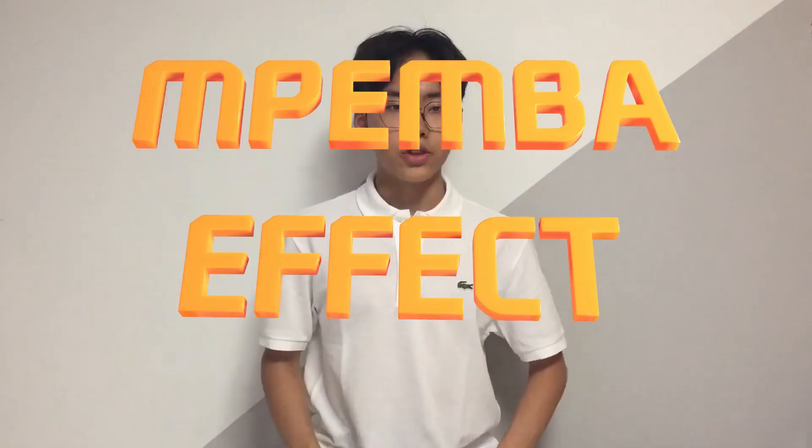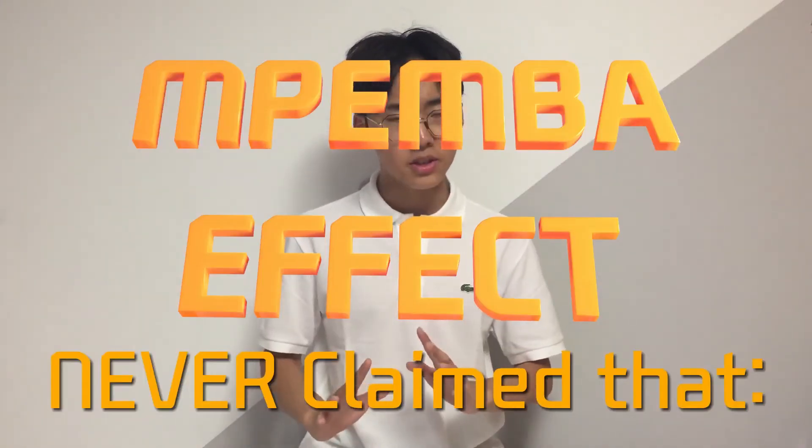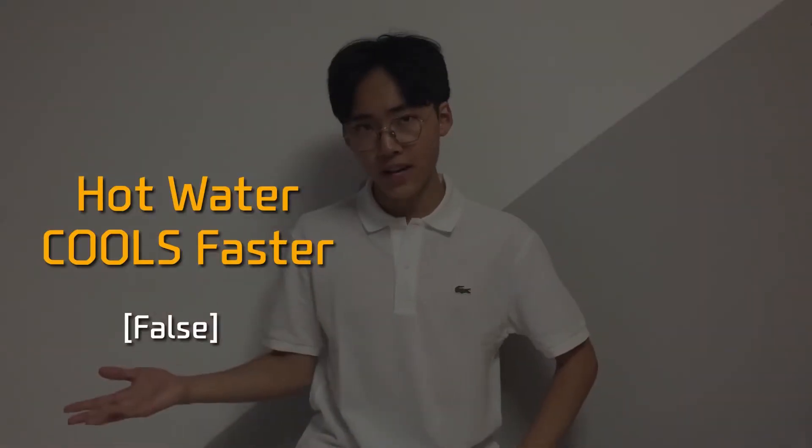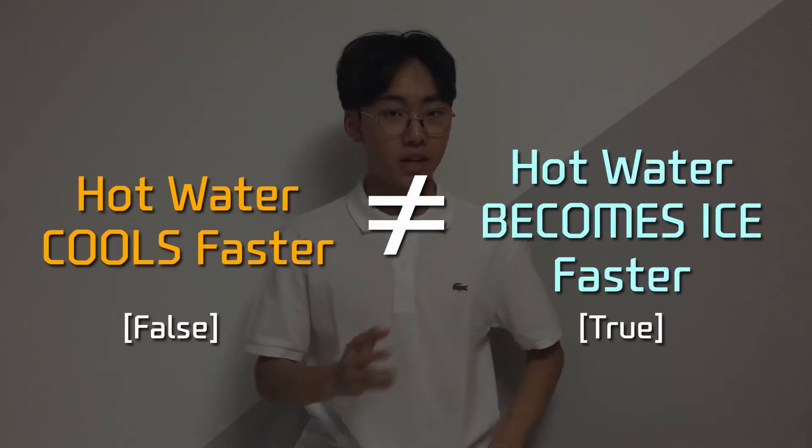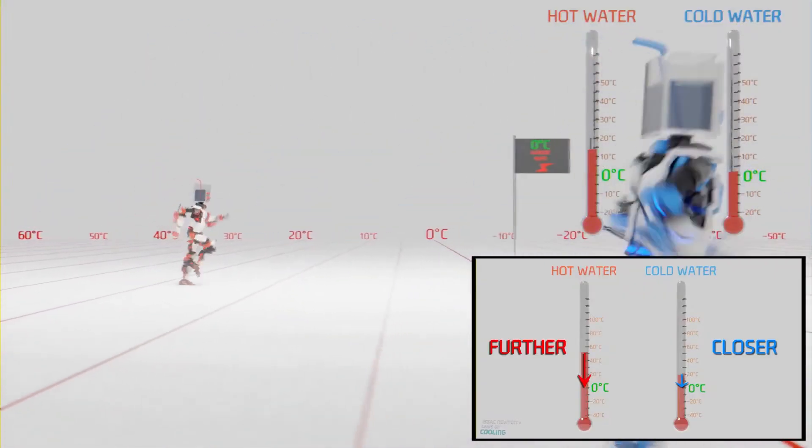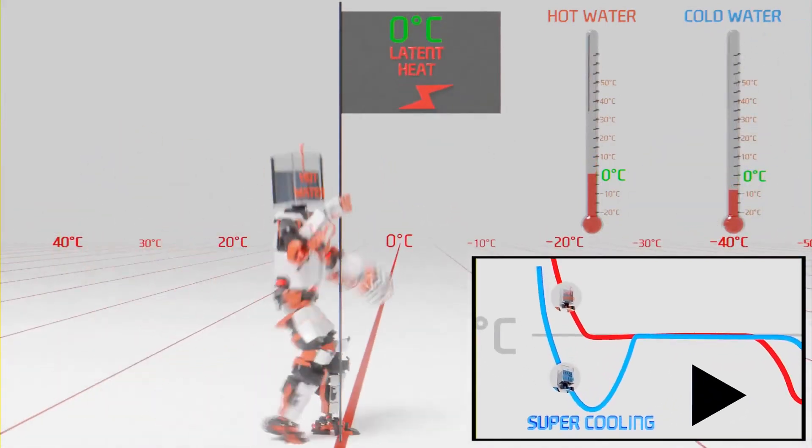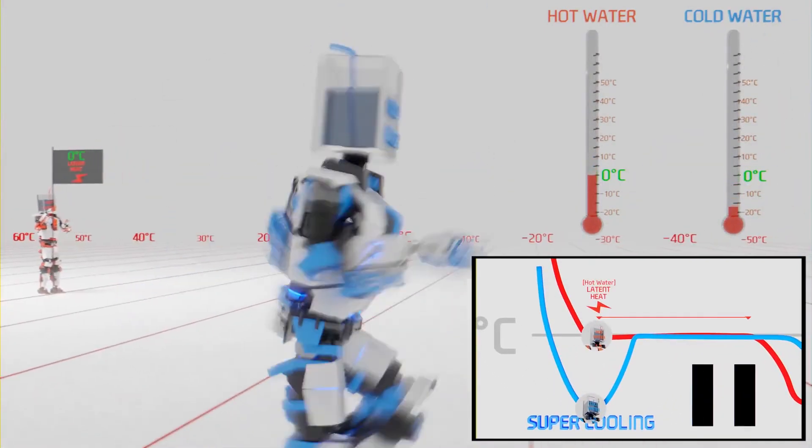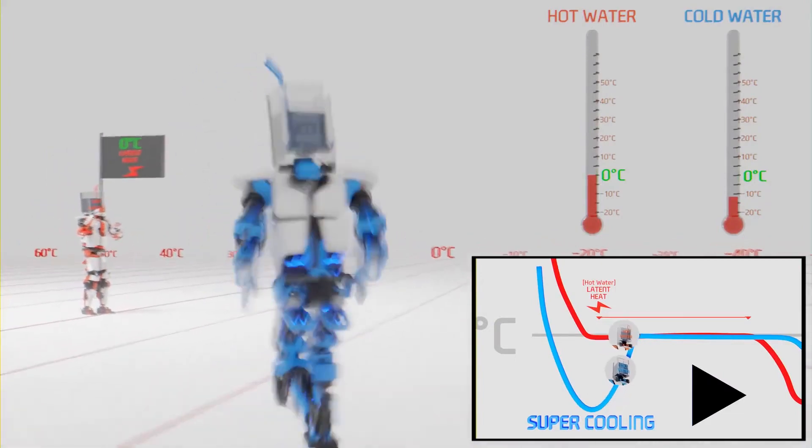The Mpemba effect never claimed that hot water cools faster. Instead, it becomes ice faster. Of course, cold water is much closer to temperature zero, but the hot water starts releasing heat first, while the cold water realizes its mistake and runs back up to zero.